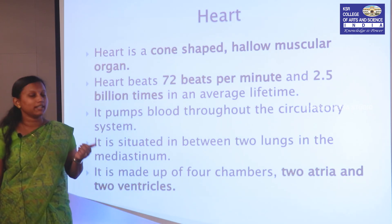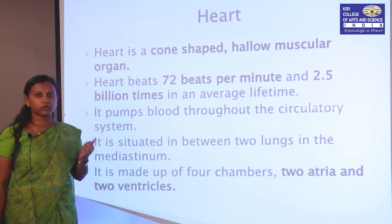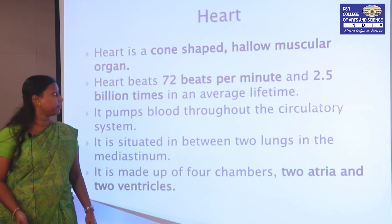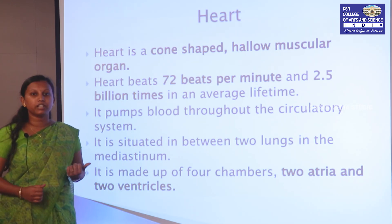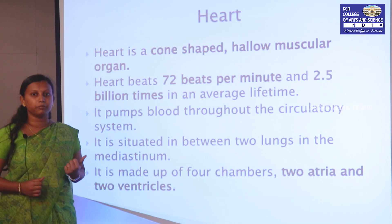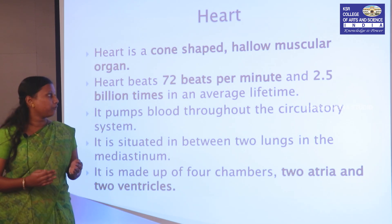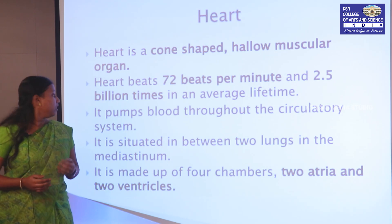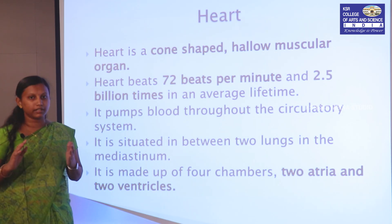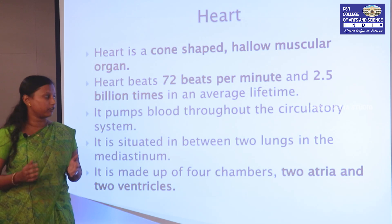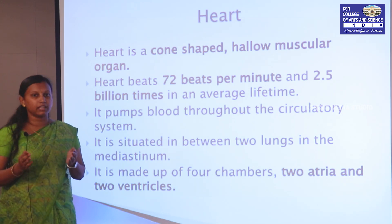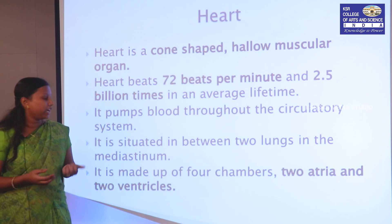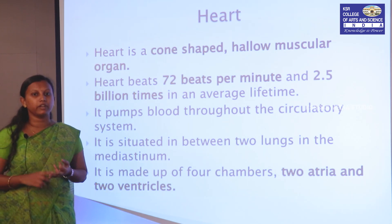The human heart is a cone-shaped hollow muscular organ which helps in pumping blood throughout the circulatory system in our body. The heart beats about 72 times per minute and an average of 2.5 million times in an average lifetime of a human being. It pumps blood through veins and arteries and is situated between the two lungs in the mediastinum. It is made up of four chambers — two atria and two ventricles.